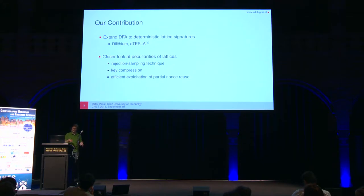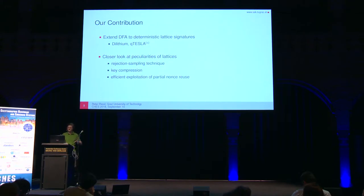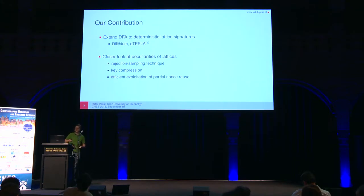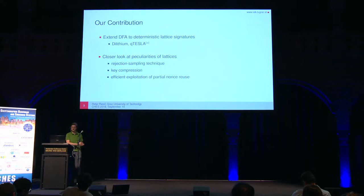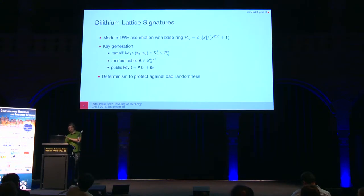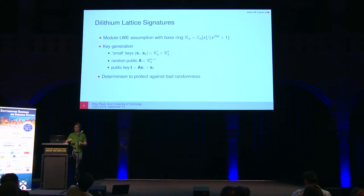That such differential fault attacks are possible here isn't all that surprising, given that Dilithium and Q-Tesla share some design similarities to their elliptic curve counterparts. But there are design peculiarities that set them apart from ECC, like rejection sampling and key compression, and it's also possible to derive more efficient and new attack paths, like efficient exploitation of partial nonce reuse. Our attacks carry over to Q-Tesla as well in a straightforward manner.